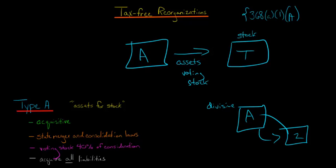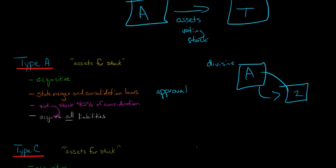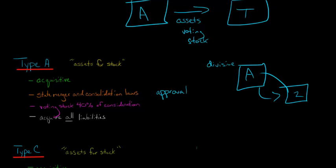However, the one drawback to Type A is that it has to comply with the state's merger and consolidation laws. That could be an issue because it means you're going to probably need approval from the shareholders for the deal to go through. Another drawback to Type A is that you're going to end up having to acquire all of the liabilities of the target, which could be a real issue if there are contingent liabilities outstanding. Maybe the target was involved with asbestos production or something at some point in the past. So that's Type A, and it's sometimes referred to as an asset for stock acquisition, although bear in mind you still have to give at least 40% of the consideration as voting stock.